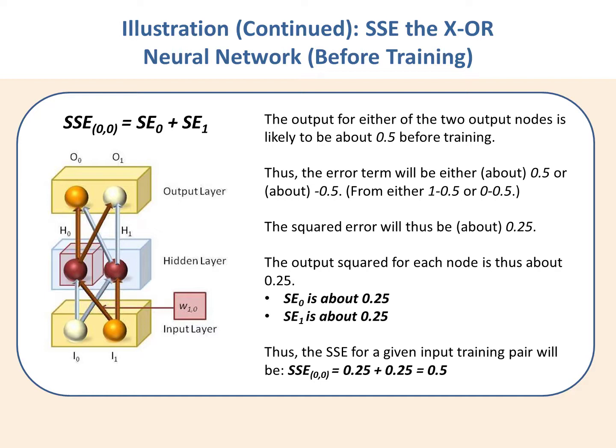For each output node we compute the error term, which is the target or desired activation minus the actual activation. In each case you'll have either one or zero minus 0.5, giving a result of either 0.5 or minus 0.5. Squaring those gives 0.25 in each case.